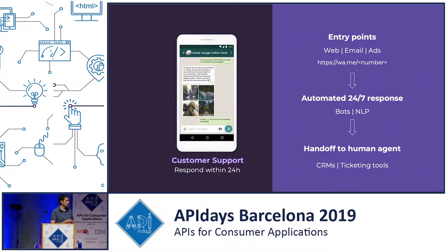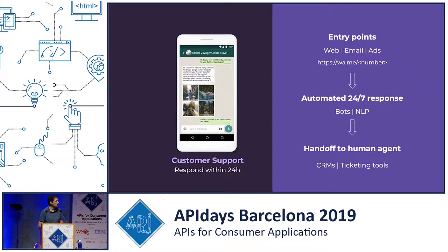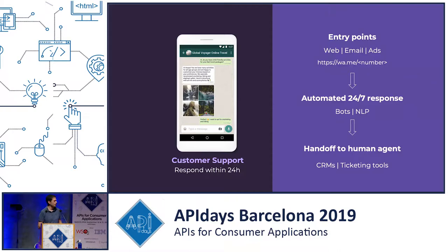The way it typically works: imagine an e-commerce site. You buy a product, they send you an email saying you can contact them on WhatsApp for any question, and they use a WhatsApp deep link — wa.me/number — which opens the native WhatsApp app on your phone with their contact already there. The user could ask anything like 'when will my order arrive?' and you can use bots or NLP to answer instantly. Bots provide instant answers 24/7 at scale — a kind of service that is impossible to achieve with human agents.